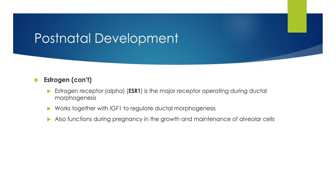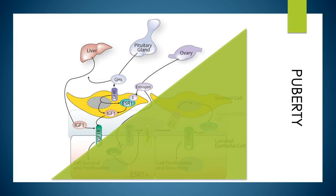Estrogen also functions during pregnancy in the growth and maintenance of alveolar cells. Altogether, studies on growth hormone, IGF-1, and estrogen have led to a model in which pituitary growth hormone induces production of IGF-1 by the liver. These factors, together with locally produced IGF-1 in the mammary stroma and epithelium, act via receptors in the mammary gland to stimulate terminal end bud formation and ductal branching. Estrogen acts in concert with IGF-1 to generate the burst of proliferation required for ductal morphogenesis.